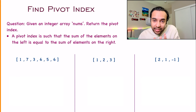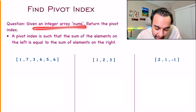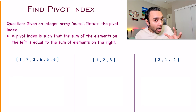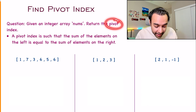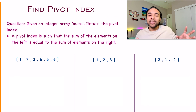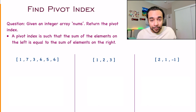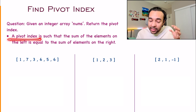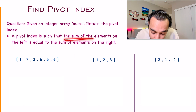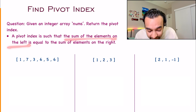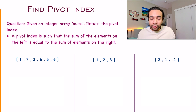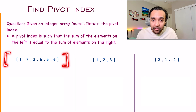Let's quickly make sure that we understand the problem statement correctly. In this problem, you are given an integer array and you have to return the pivot index. A pivot index is not a very generic term — it can change based upon the problem that you are solving. For this particular problem, you define a pivot index such that the sum of elements on the left is equal to the sum of elements on the right.